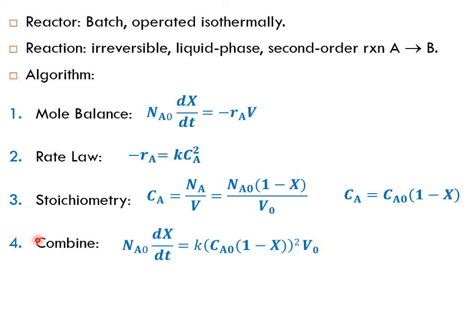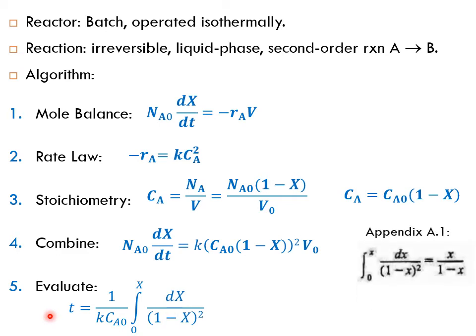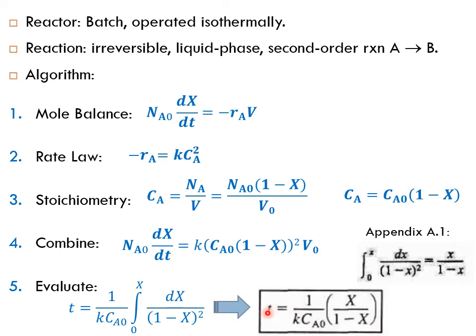And finally, we're going to evaluate. We're not going to evaluate the parameters now, but we're going to evaluate the equation. So let's rewrite this equation in such a way that we will integrate this function now. You can either integrate using your knowledge and calculus, or you can go to appendix A1. And you can find that the integration of this function is basically X over (1 - X). So therefore, we'll have the time equals 1/(k CA0) times X/(1 - X). And this is a good example to show you how to use the five-step algorithm in designing a reactor. In this case, it's a batch reactor.